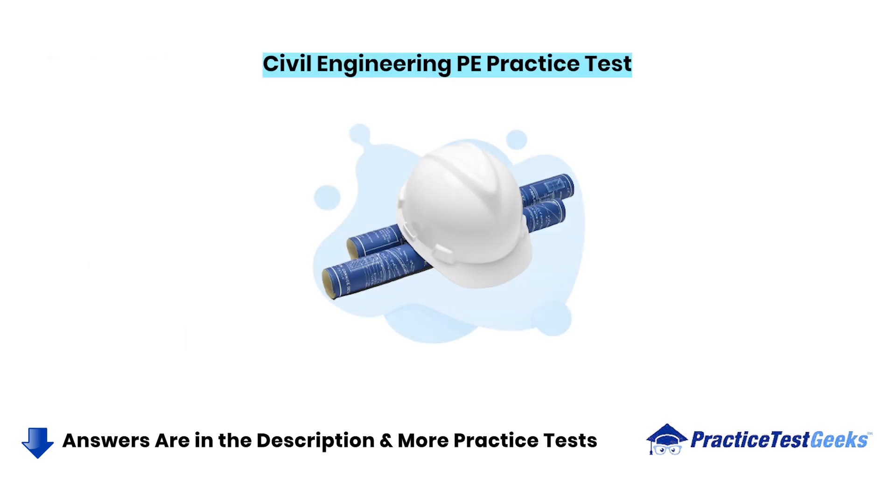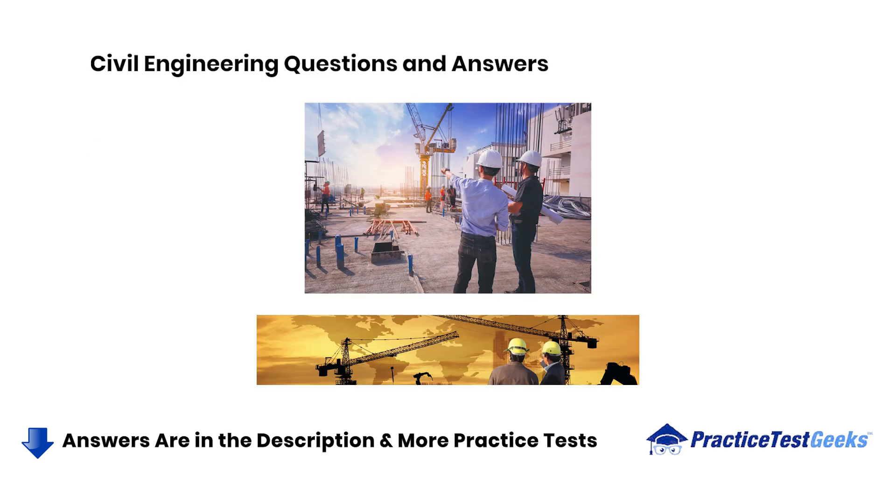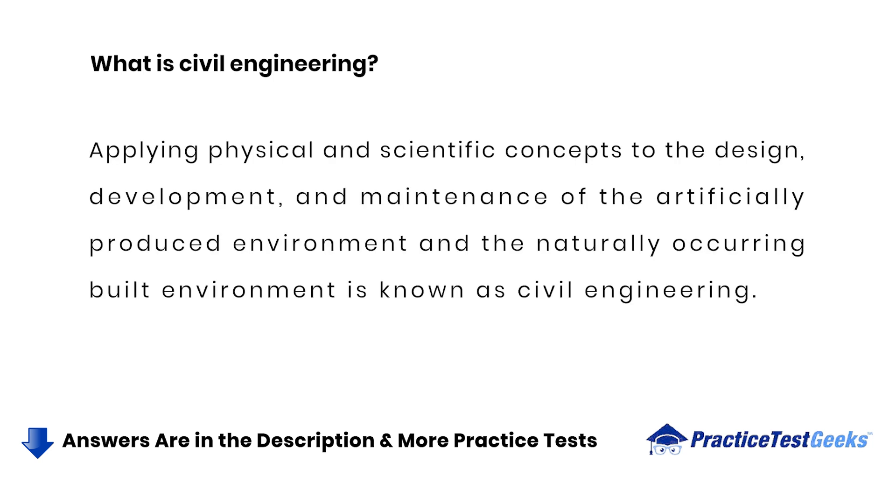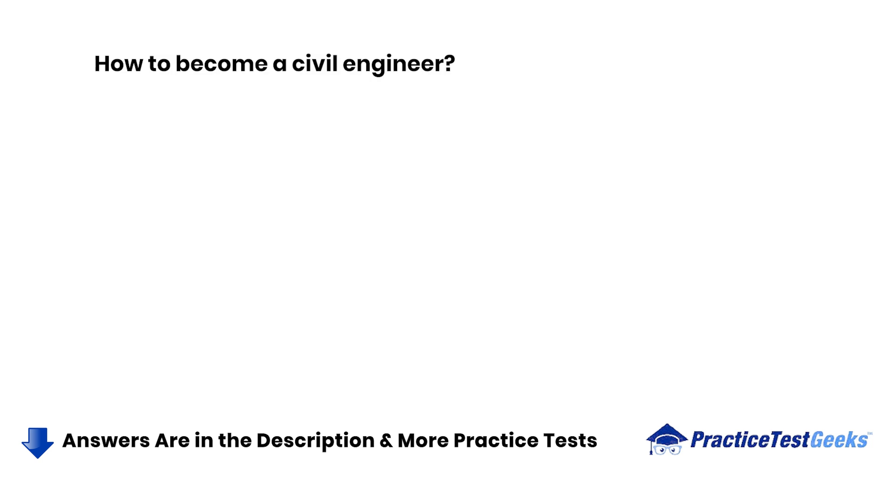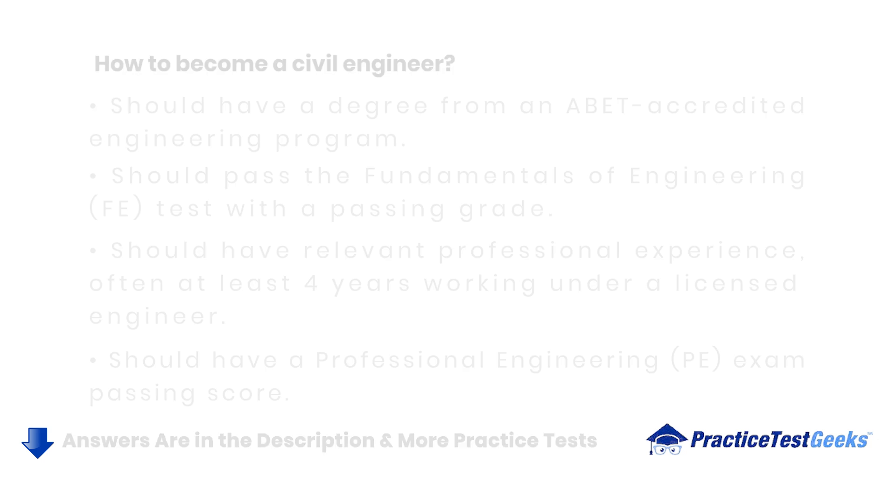Civil engineering PE practice test. A professional engineer is a licensed professional authorized to prepare, sign, and seal engineering plans. They must pass rigorous exams and meet state-specific eligibility requirements to earn their licensure. Applying physical and scientific concepts to the design, development, and maintenance of the artificially produced environment and the naturally occurring built environment is known as civil engineering. How to become a civil engineer: Should have a degree from an ABET-accredited engineering program. Should pass the fundamentals of engineering F.E. test with a passing grade. Should have relevant professional experience, often at least four years working under a licensed engineer. Should have a professional engineering PE exam passing score.